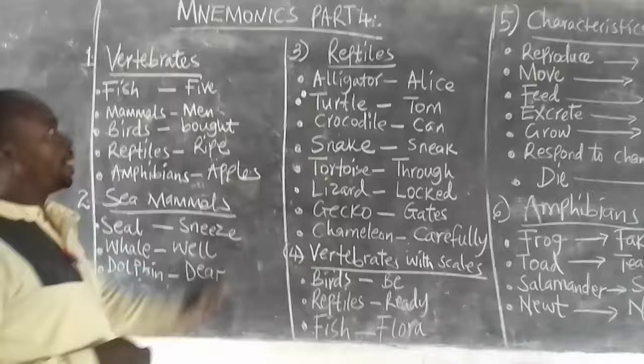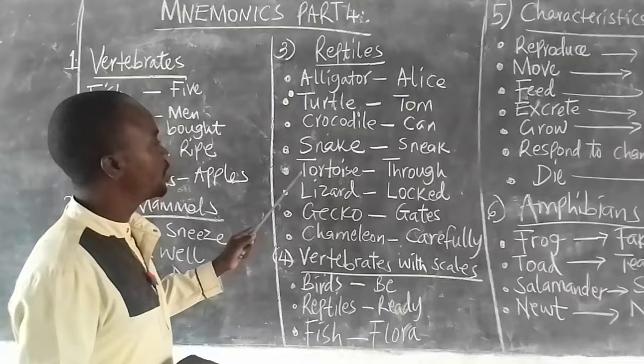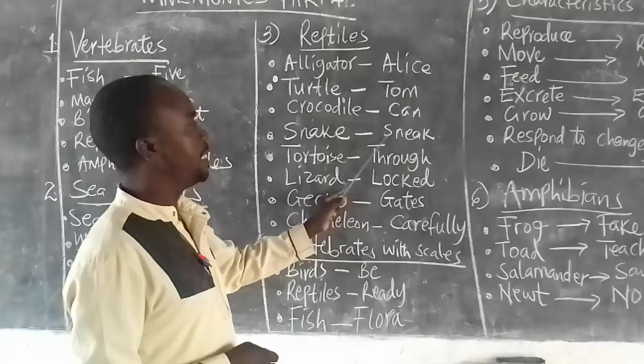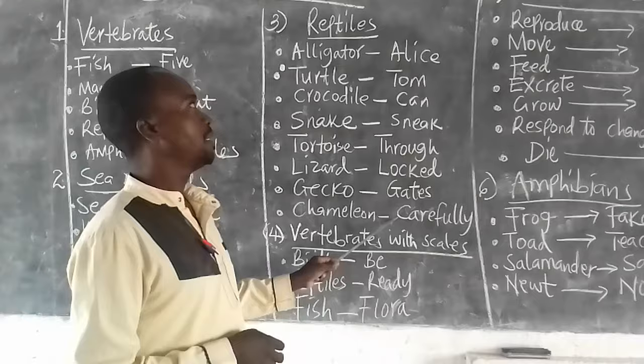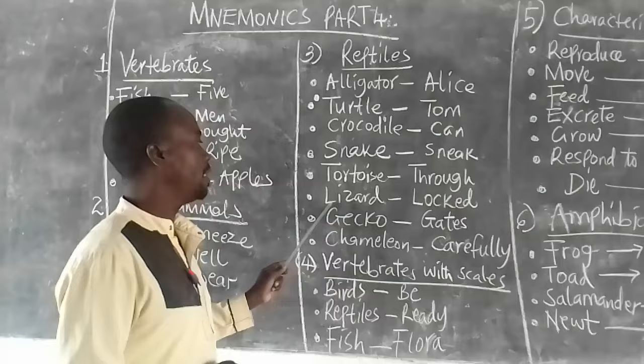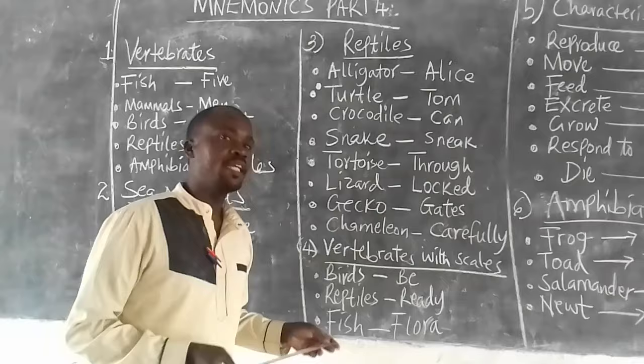Number three, reptiles. Examples: alligator, turtle, crocodile, snake, tortoise, lizard, gecko, chameleon. Formula: Alice Tom can sneak through locked gates carefully. I repeat, reptiles examples follow: alligator, turtle, crocodile, snake, tortoise, lizard, gecko, chameleon. Mnemonic: Alice Tom can sneak through locked gates carefully.